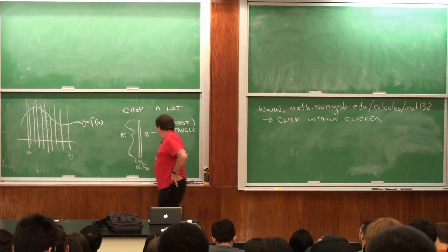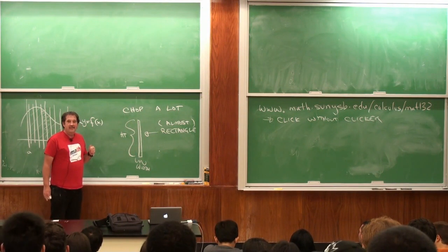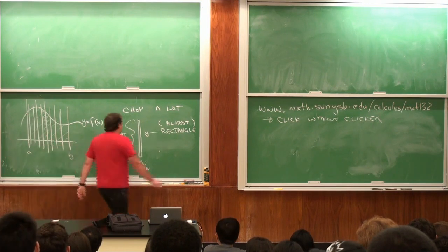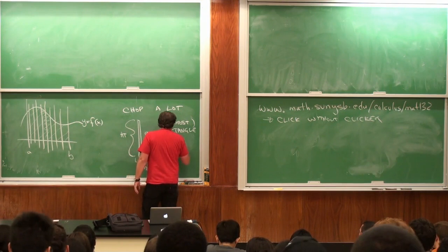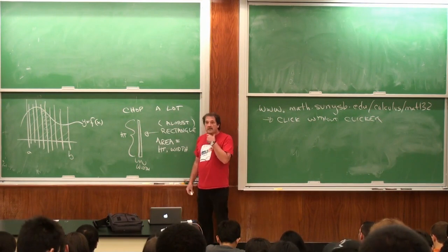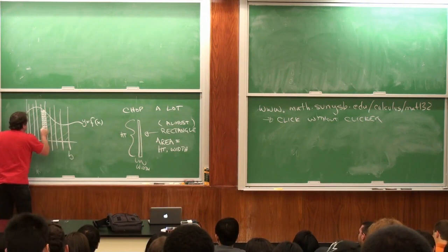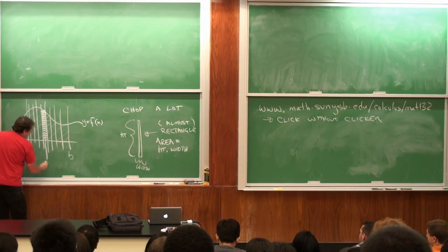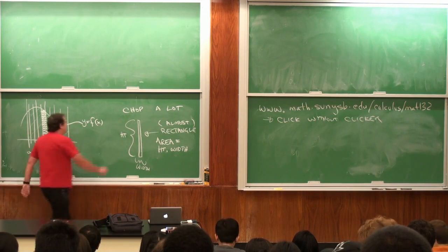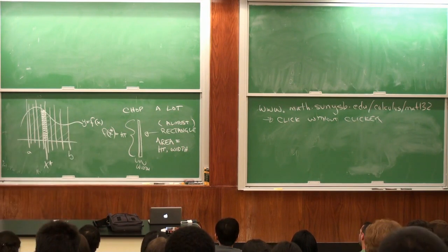What is the area of this rectangle? It's the height times the width. What's the height? Well, depending on where I am — if this rectangle sits right here and there's some point, let's call it x-star, sitting in there — then the height is f(x-star). And the width is however much I chopped it up.